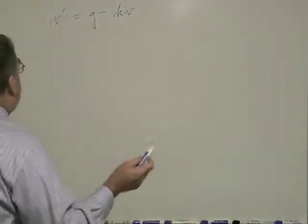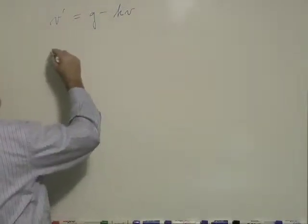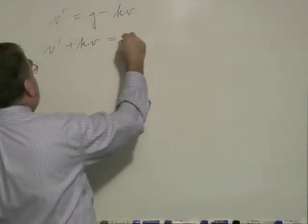It's a familiar type of differential equation, first order. I'm going to add the v term over here. So v prime plus k v equals g.